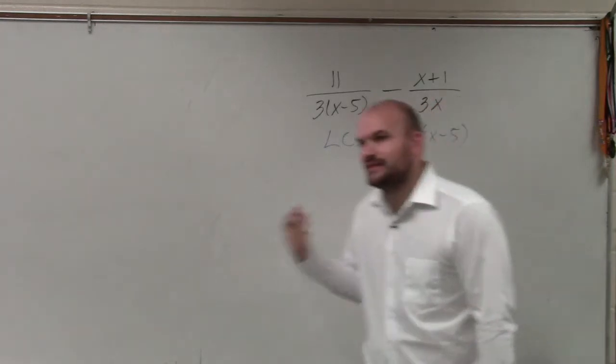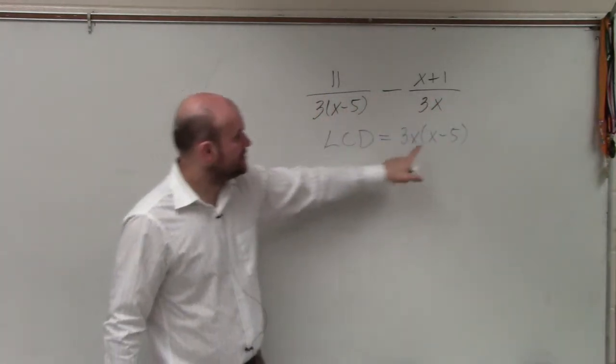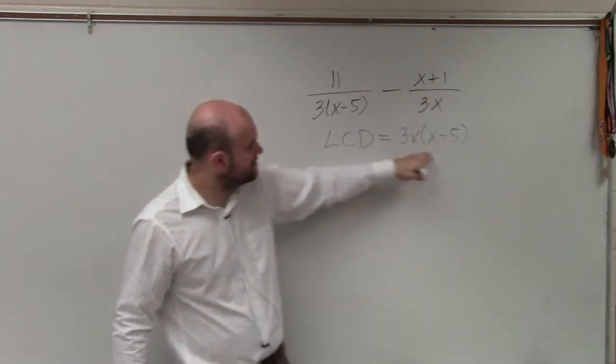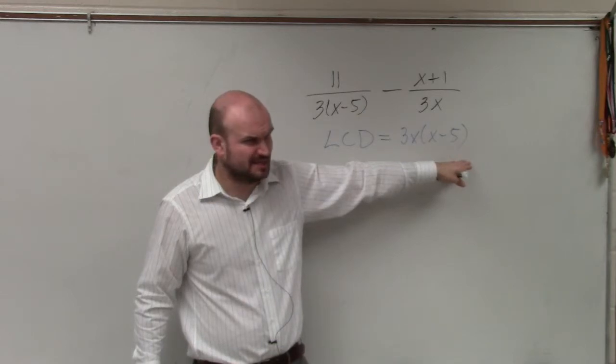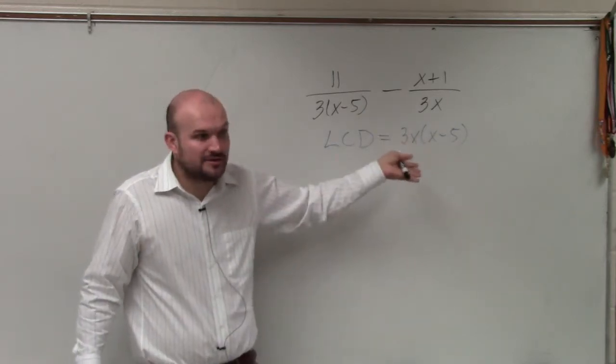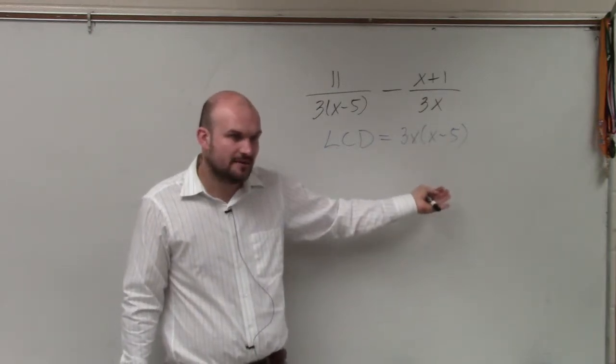So when you're identifying the least common denominator, they don't both share an x. They both don't share the expression x minus 5, but they do share 3. So this is going to be my least common denominator. Does that kind of make sense? If you guys did 9, you used a common denominator, you can still do that. It's just not simplified. So you'd have to simplify it at the end, all right?